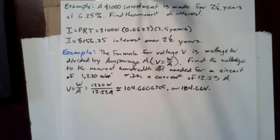Last example, the formula for voltage V is wattage W divided by amperage A. V equals W over A.